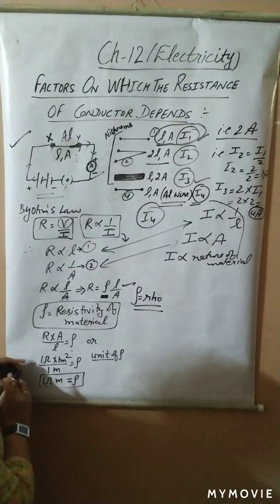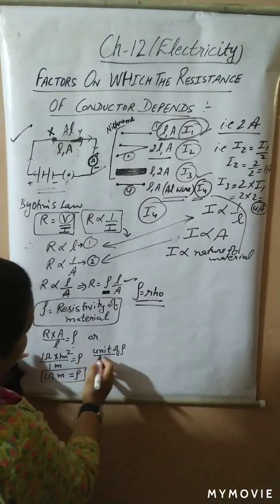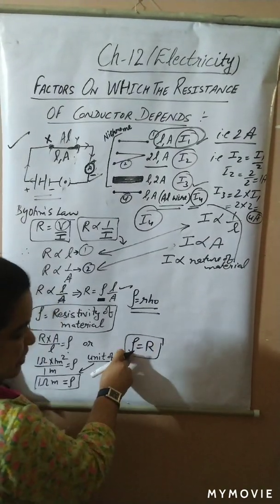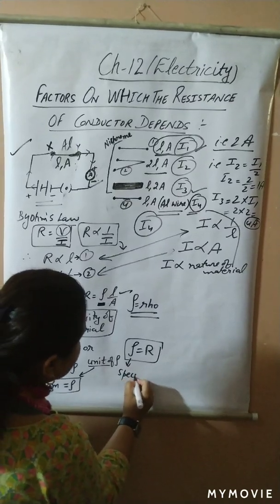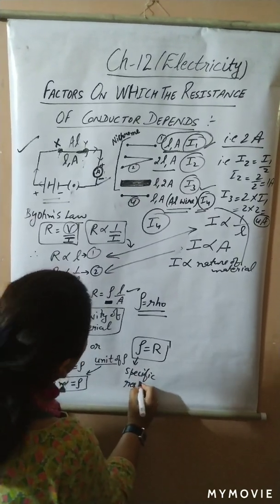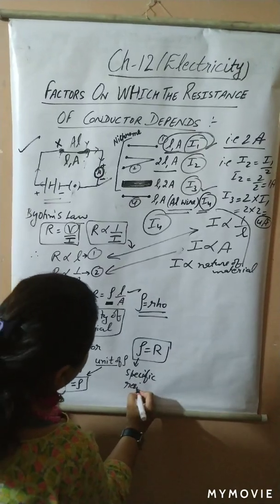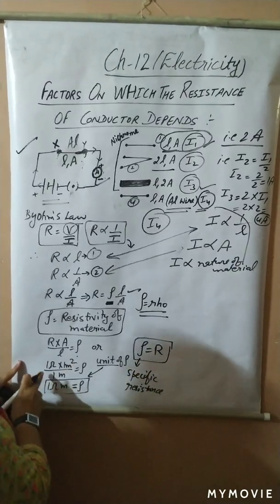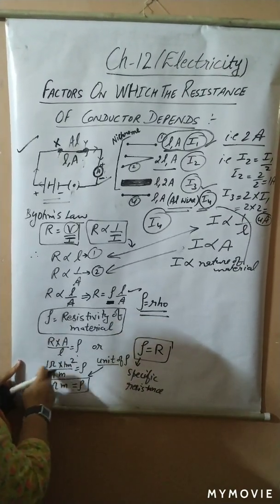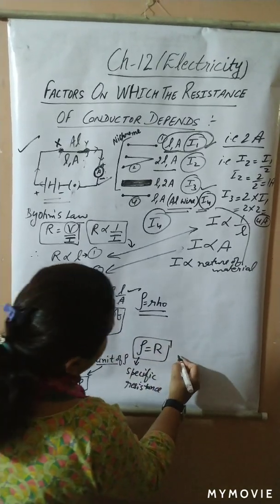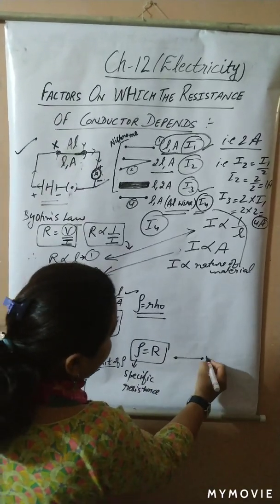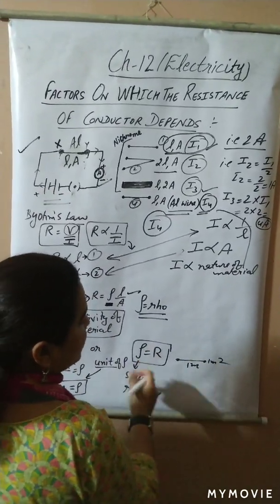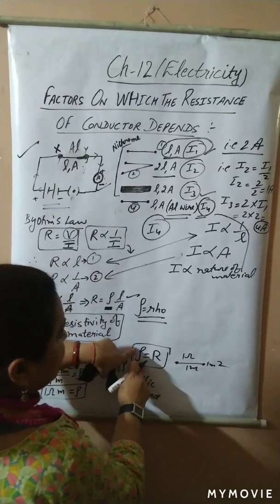So what is rho? The unit of rho is ohm·meter. Rho is also called specific resistance. Specific resistance is equal to the resistance of a conductor whose length is one meter and whose area of cross-section is one meter square — like a wire of area one meter square and length one meter.